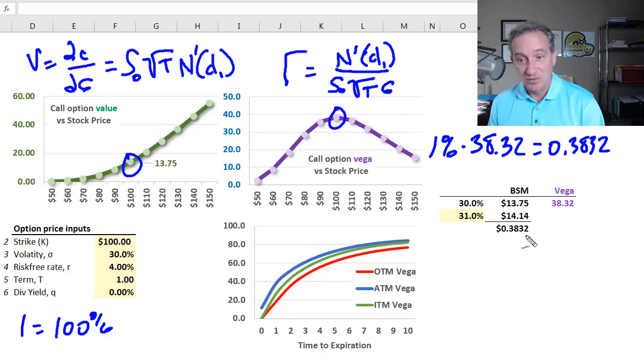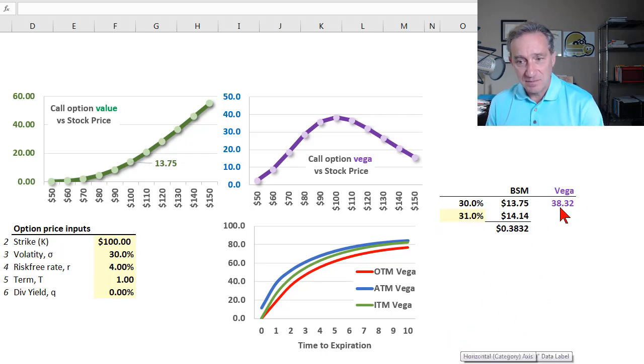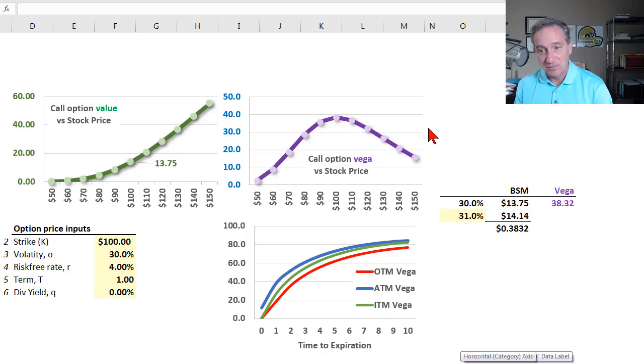One thing about Vega I've occasionally gotten held up on is the units. If we do this strictly mathematically, I get a Vega of 38.32, but in some conventions it would be typical to divide this by 100 and say that the Vega is 0.3832.